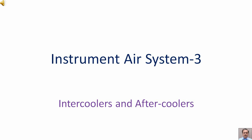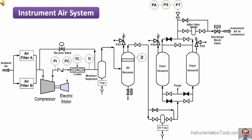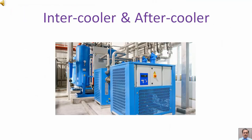Instrument air system part 3. In this we are going to talk about intercoolers and aftercoolers. This is the typical layout diagram of an instrument air system. In this diagram one can see the component named cooler. It is located just after the compressor. There are two types of coolers: intercoolers and aftercoolers.